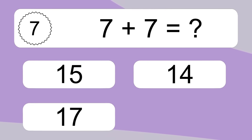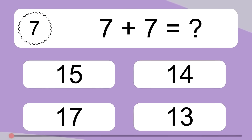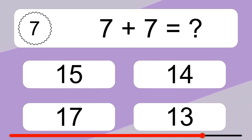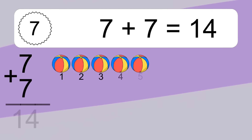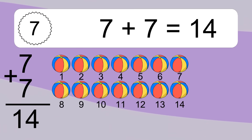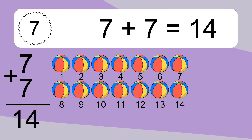7 plus 7 equals what? 7 plus 7 equals 14. Let's count it: 1, 2, 3, 4, 5, 6, 7, 8, 9, 10, 11, 12, 13, 14.